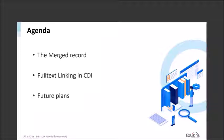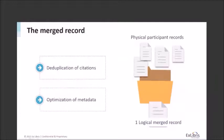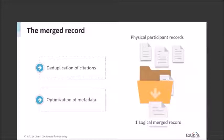Let me start with the merged record. This is an overview of how it works, what the merged record is, the match and merge process, and what it means to the user. As you know, CDI indexes content from many different sources including publishers, content aggregators like ProQuest, EBSCO, etc., open access websites, and institutional repositories. It covers many different material types — articles, books, book chapters, audiovisual and other material. In total we are indexing more than four billion records, which requires automated processes for indexing and normalization.